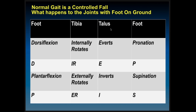If we think about these with abbreviations: normal gait is a controlled fall. Think about what happens to the joints when the foot is on the ground. At heel strike, the foot goes into dorsiflexion, the tibia internally rotates, the talus everts, and the foot pronates during the first portion of gait — DIREP: Dorsiflexion, Internal rotation, talus Eversion, Pronation. Then as we go into toe off, the foot plantar flexes, the tibia externally rotates, the talus inverts, and the foot supinates — PIRES.